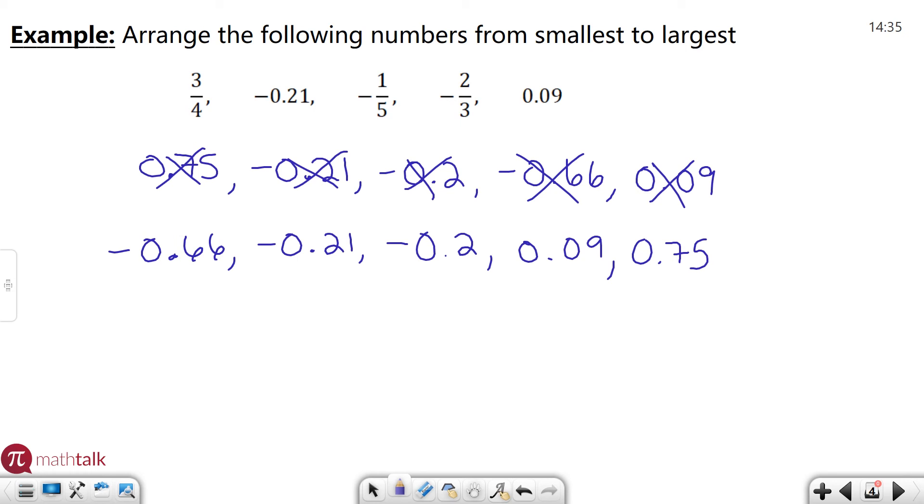Negative 0.66 was the negative two-thirds. Negative 0.21 is negative 0.21. Negative 0.2 was our negative one-fifth fraction. And then we have 0.09, which is the same. And then 0.75 was our three-fourths fraction. So now we have our final answer of the numbers in order from smallest to largest.